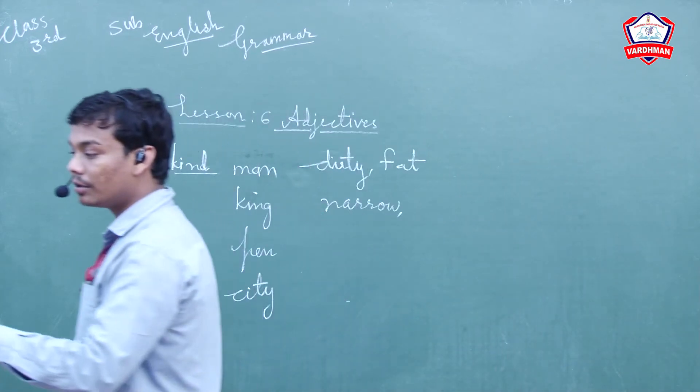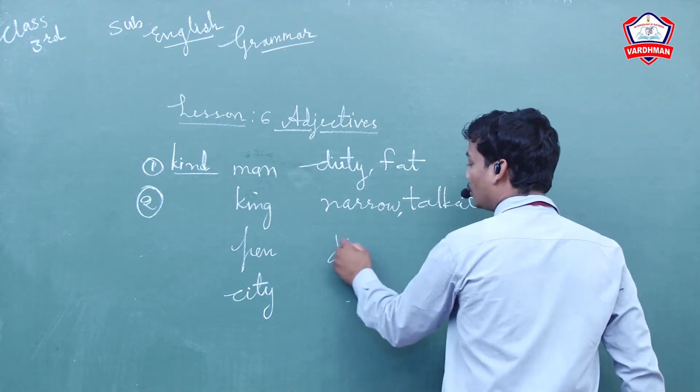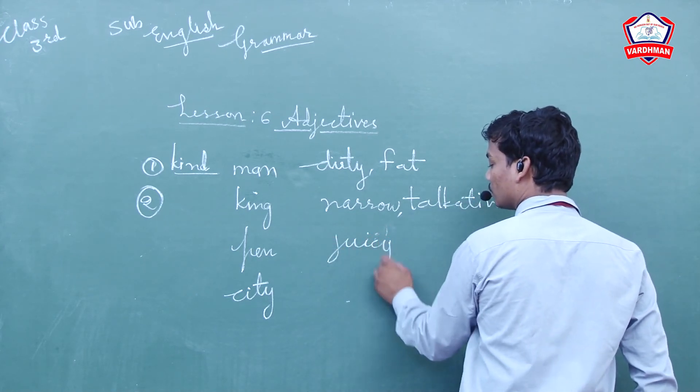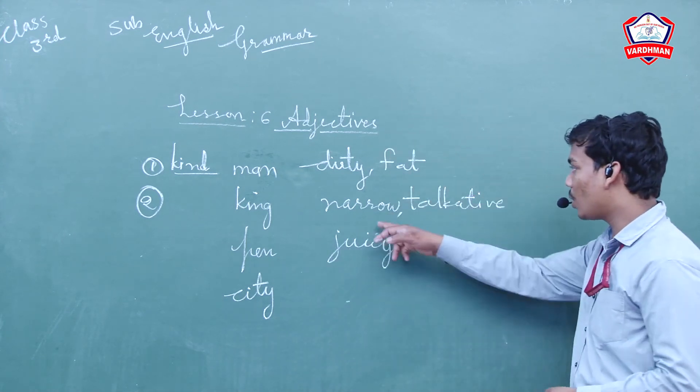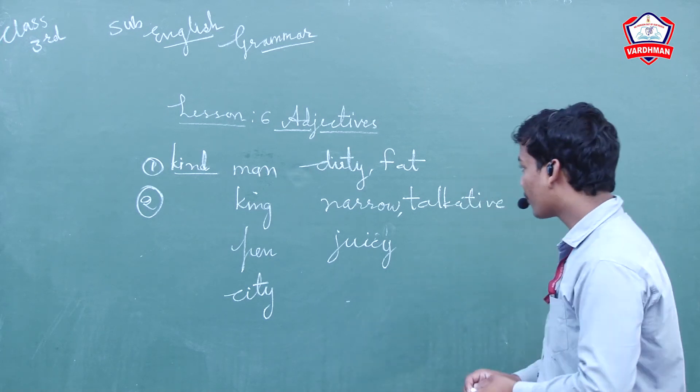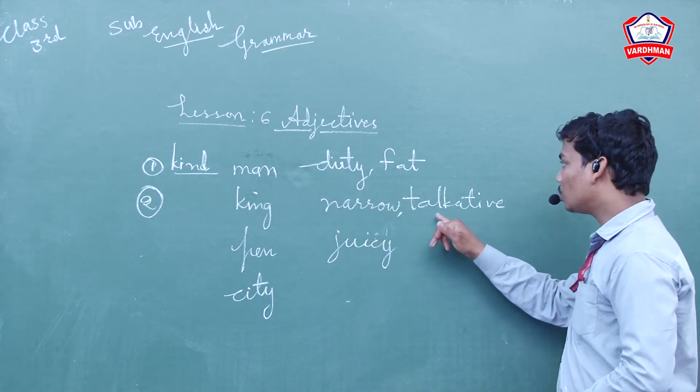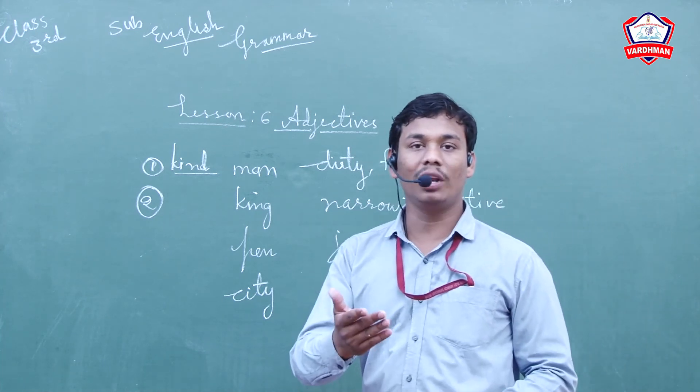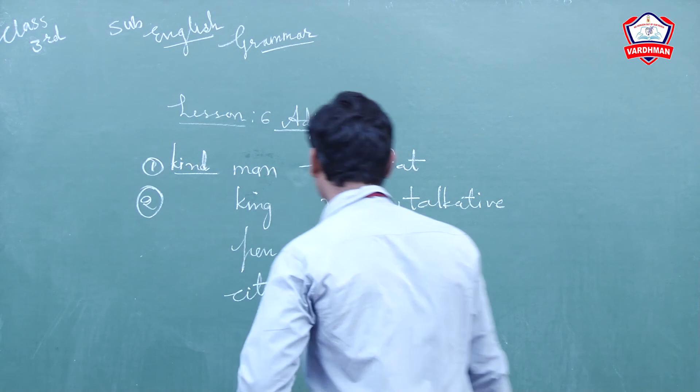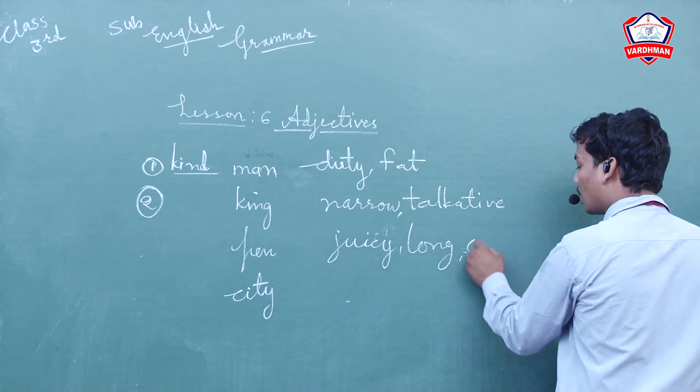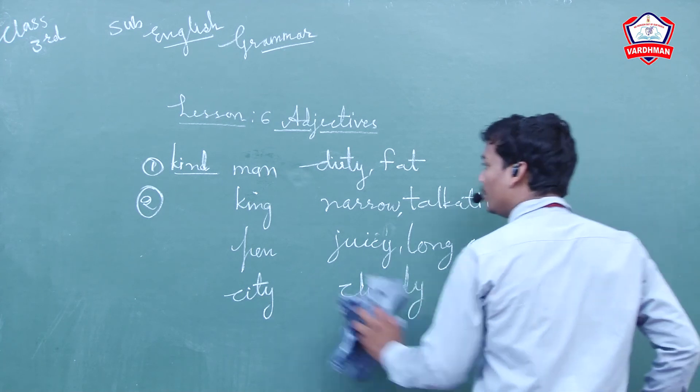Fat, narrow, dirty, fat, narrow, talkative, long, and juicy. Talkative means a person who talks more. Long, cunning, and cloudy. Cloudy means with clouds. So these are the options.